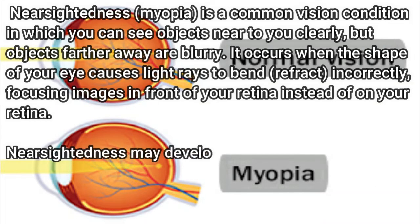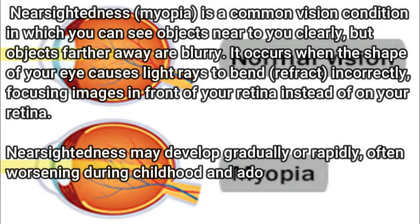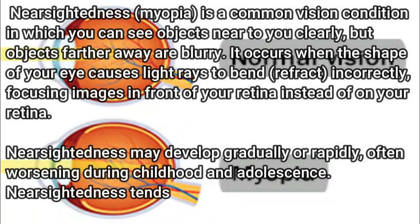Nearsightedness may develop gradually or rapidly, often worsening during childhood and adolescence. Nearsightedness tends to run in families.